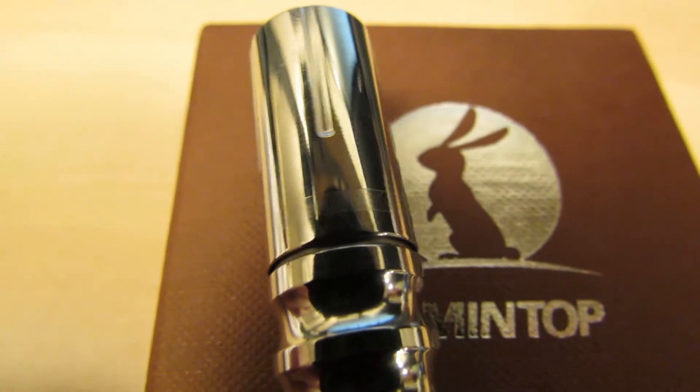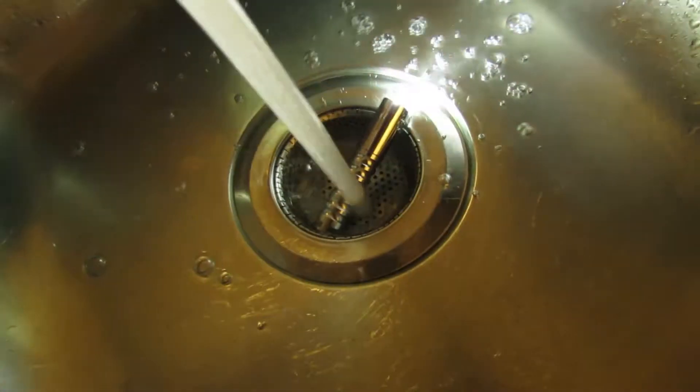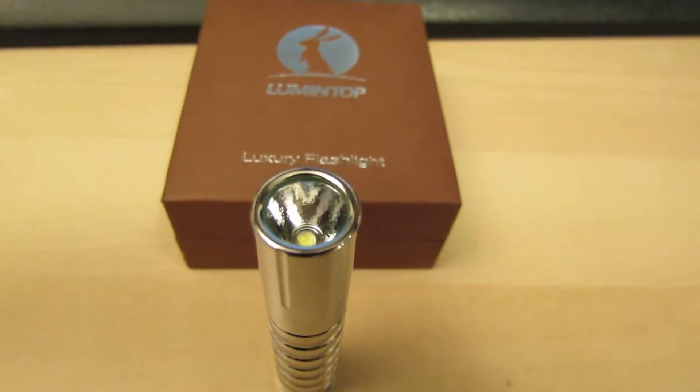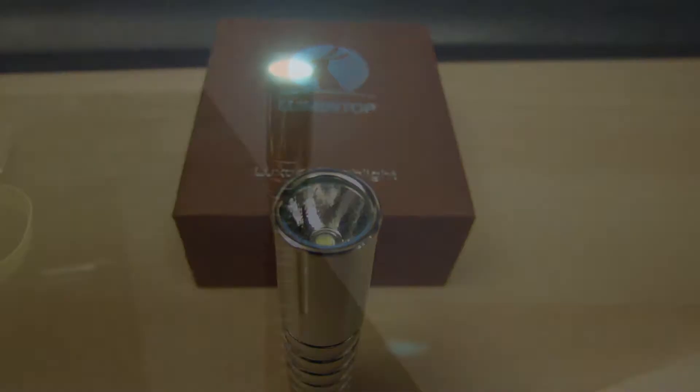It's made of polished stainless steel and it's waterproof down to 2 meters. It's impact resistant to 1.5 meters so you can drop it and it won't break. It can do a tail stand so you can let it sit on the table and light up the entire room with it.